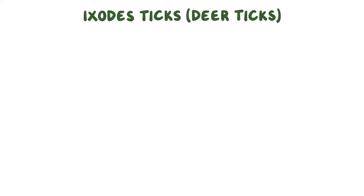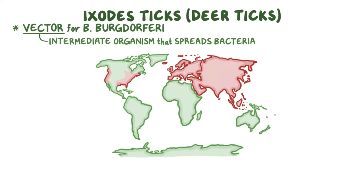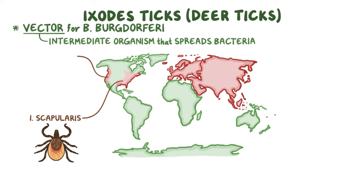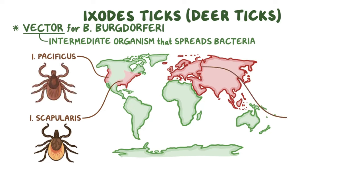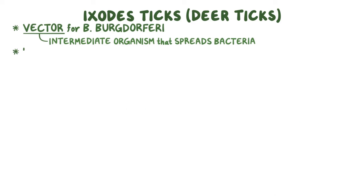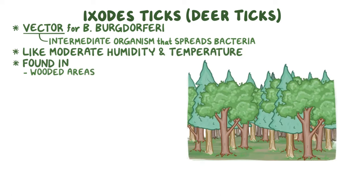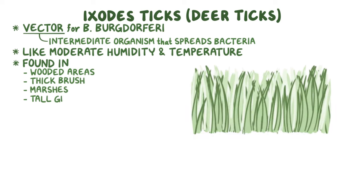Hard-shelled Ixodes ticks, or deer ticks, are the vector for B. burgdorferi, meaning they're the intermediate organism that spreads the bacteria. In the Northeast and Midwest USA, I. scapularis, the black-legged deer tick, is the main vector, while on the Pacific coast it's I. pacificus, the western black-legged tick. In Europe and Asia, I. ricinus and I. persulcatus are the primary vectors. Ticks like environments with moderate humidity and temperature, so they're often found in wooded areas, thick brush, marshes, and tall grass.